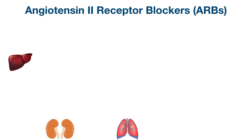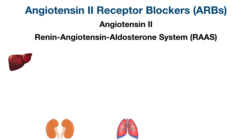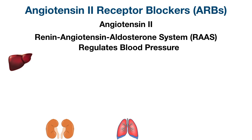In order to better understand angiotensin 2 receptor blockers or ARBs, we need to know what angiotensin 2 is. Angiotensin 2 plays an important role in the renin-angiotensin-aldosterone system. One of the main goals of this system is to regulate blood pressure and blood volume, especially when blood pressure is low. Whenever there is decreased blood flow to the kidneys, the kidneys detect the decreased perfusion and they panic because they're afraid they're not receiving enough blood.